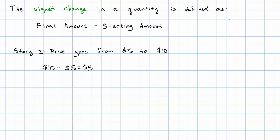But what about the second story? When the price goes from $10 to $5, according to that definition, we have to say $5 minus $10. Well, according to what we saw in the pictures, we still expect this difference to be 5. But it's going the other way around. To indicate that it's going the other way around, we call it negative.